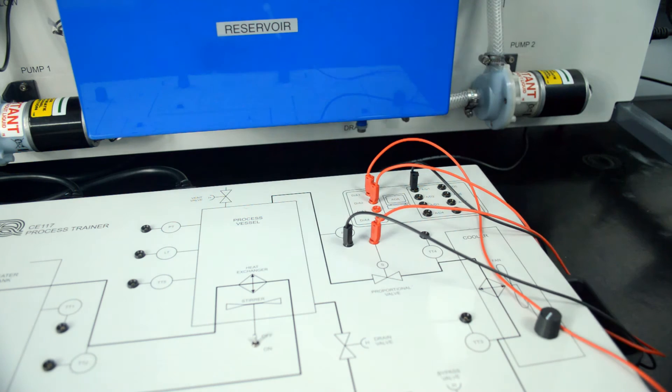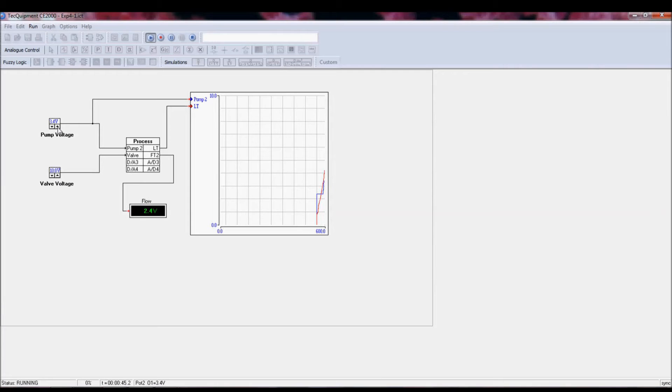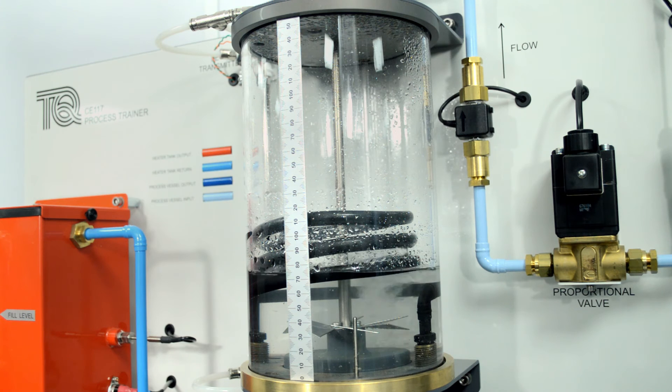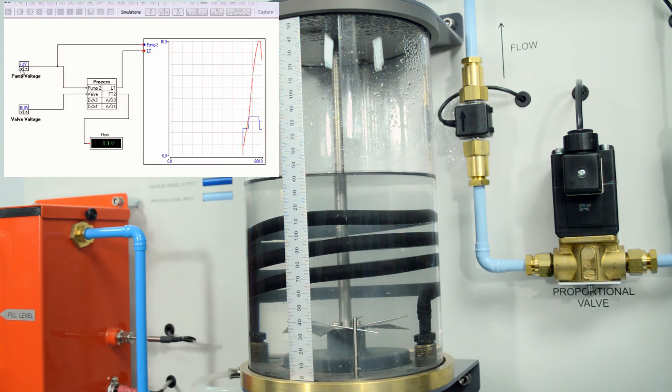This allows the students to link each part of the experiment module to a suitable computer for remote PID control and data acquisition. This sped up experiment demonstrates how users can control the liquid level within the process vessel using Tech Equipment's C2000 software.